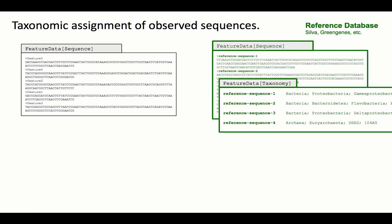Taxonomic classification looks at each one of these sequences and tries to figure out which of a range of species that sequence came from. The range of species that you might be comparing your sequences against depends on your reference database. Several good reference databases exist and more are being created all the time. Two classics are SILVA and Greengenes.